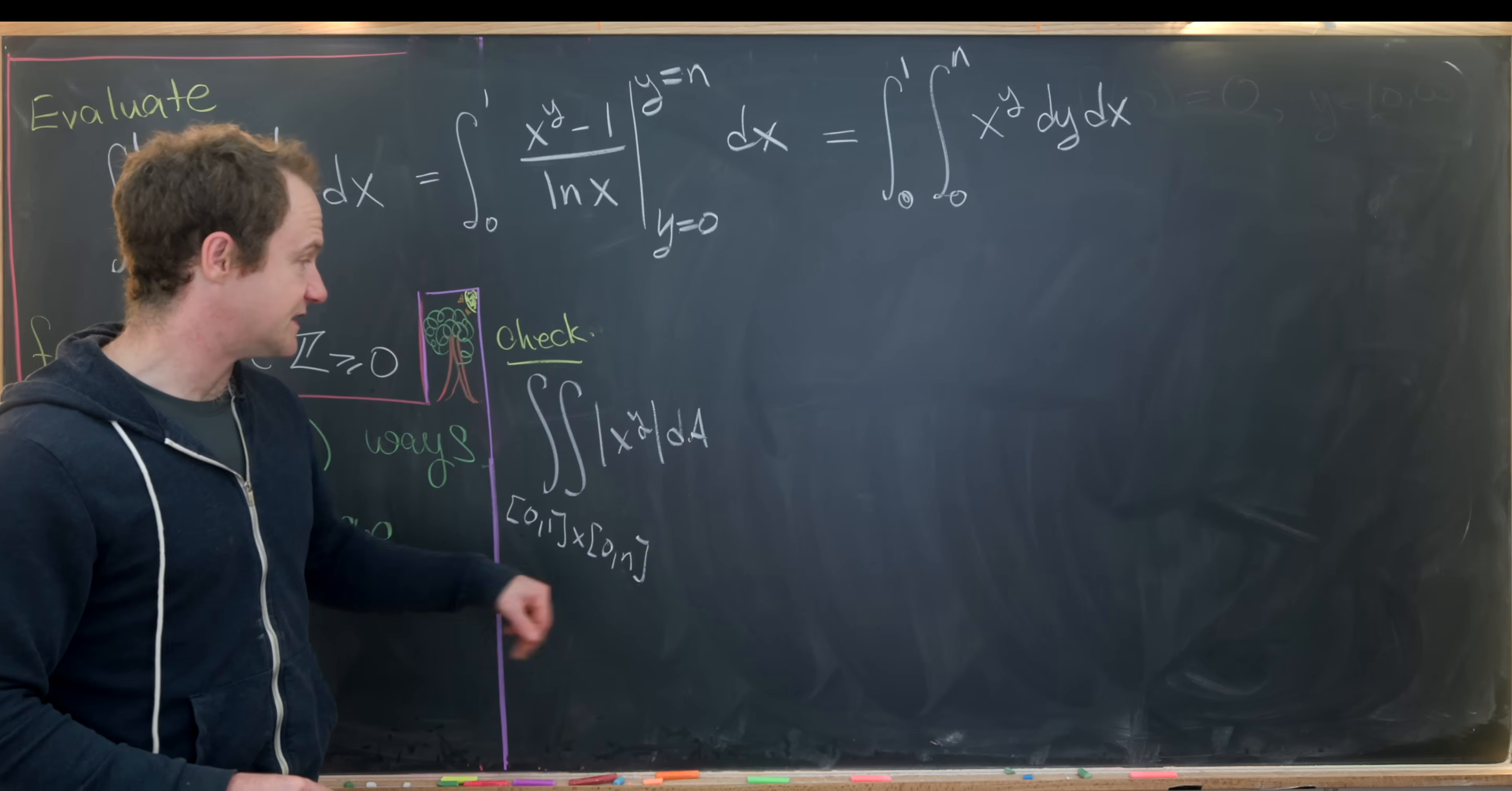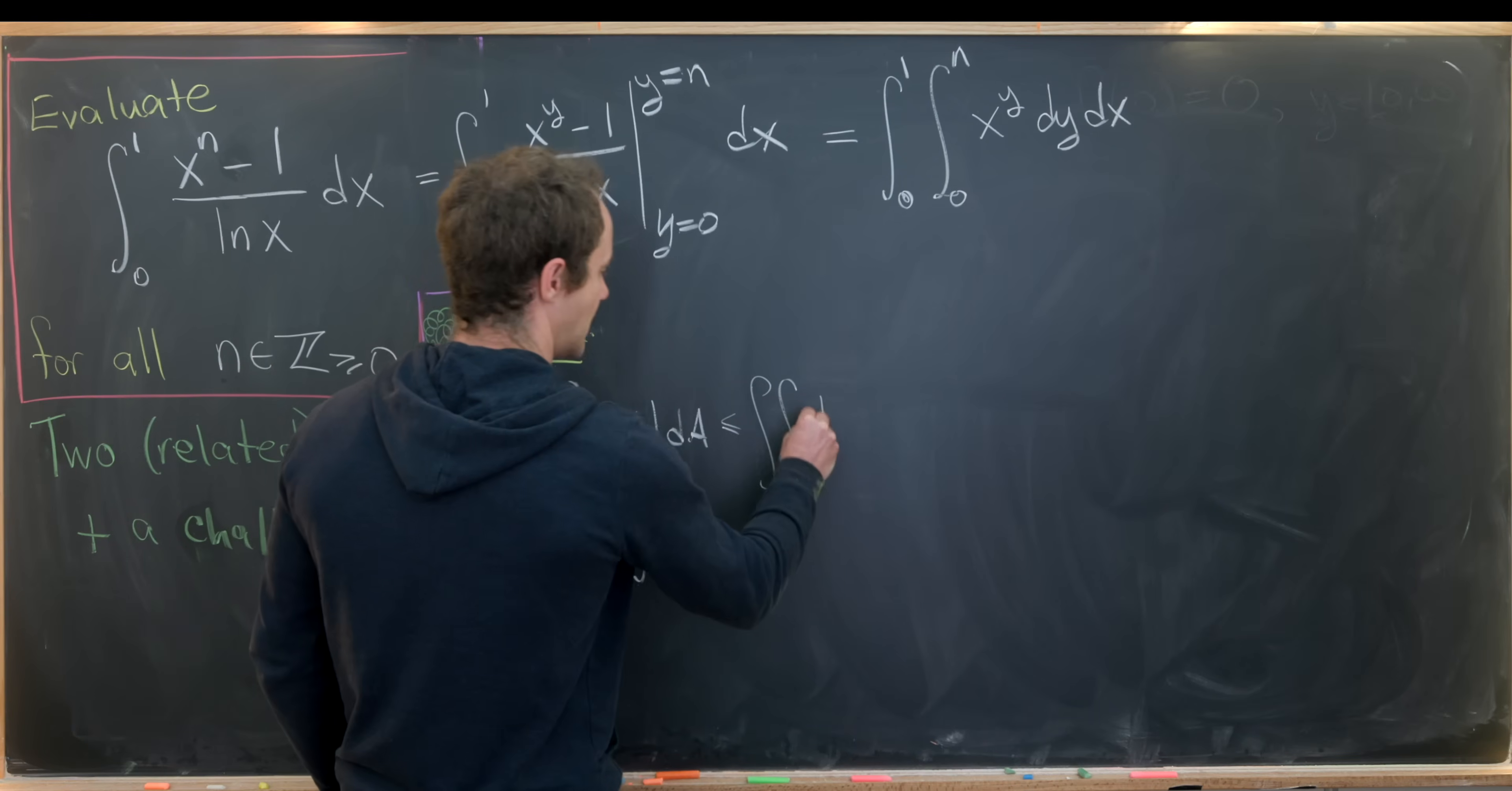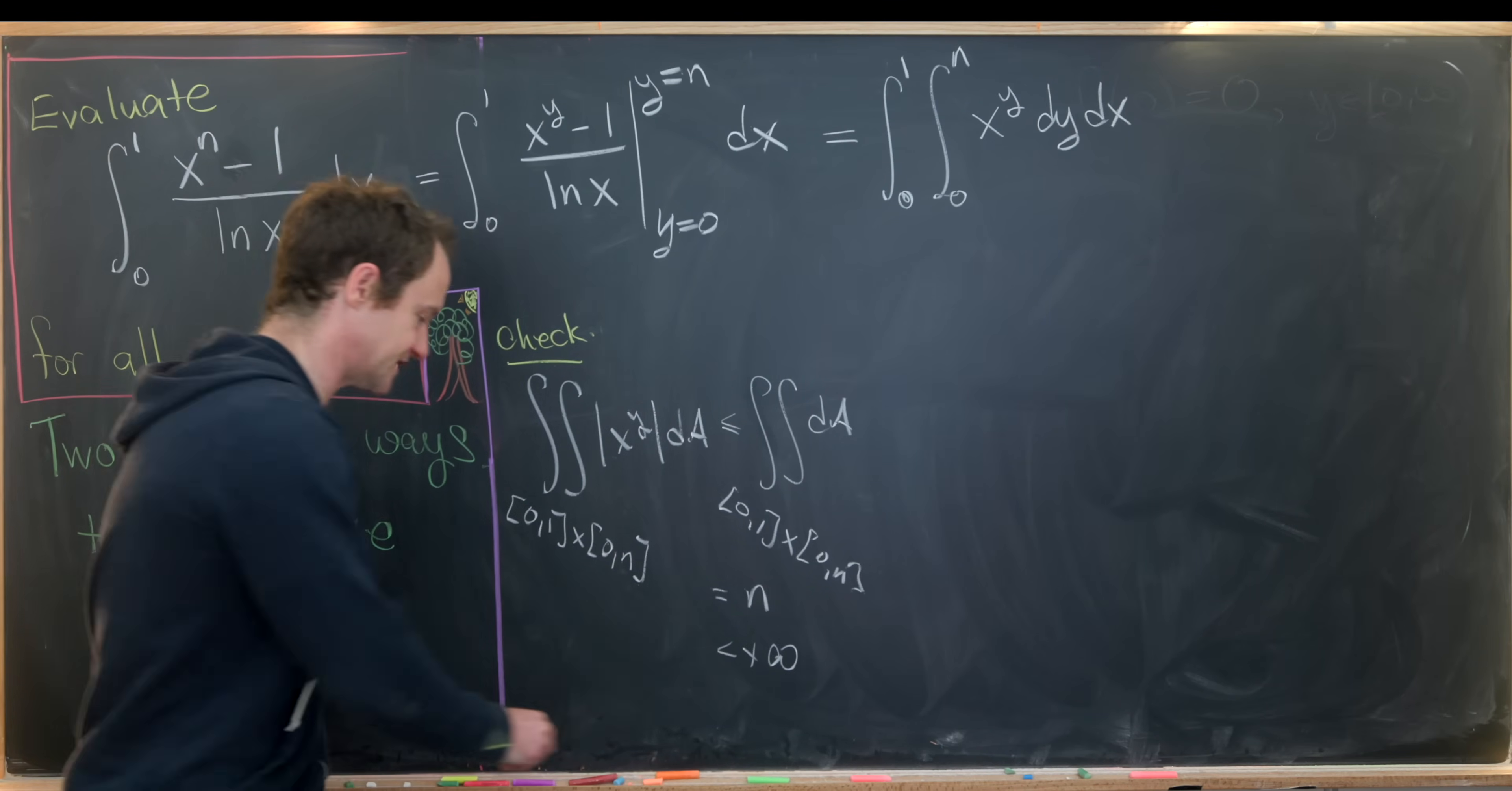Meaning that this is less than or equal to the double integral of 1 to the y. But 1 to the y is always going to be equal to 1. So this is going to be the double integral dA over this region, 0 1 cross 0 n. But that gives us the number n, because that's the area of that rectangle. But that n is less than plus infinity. So we've got absolute convergence here. We're okay.